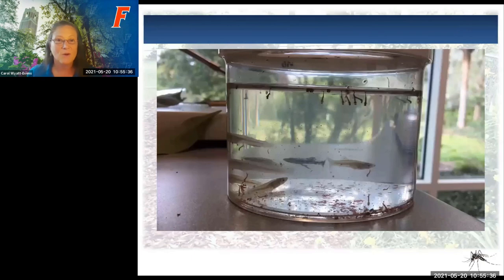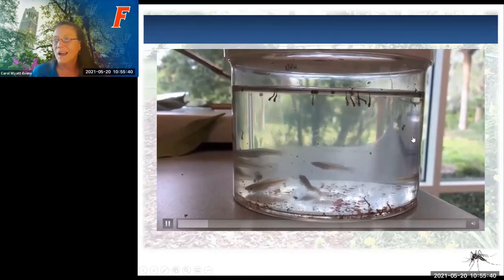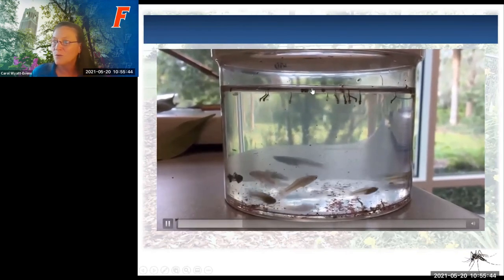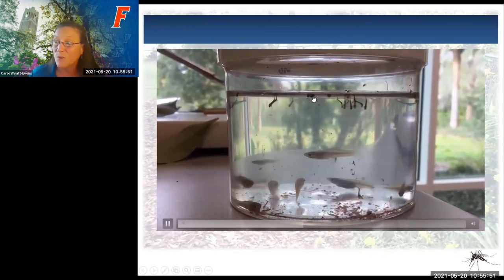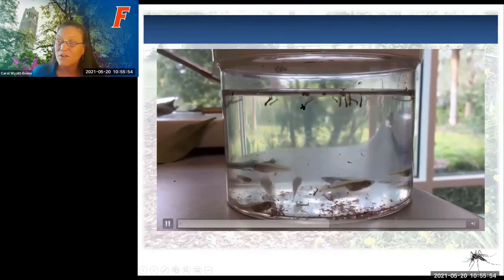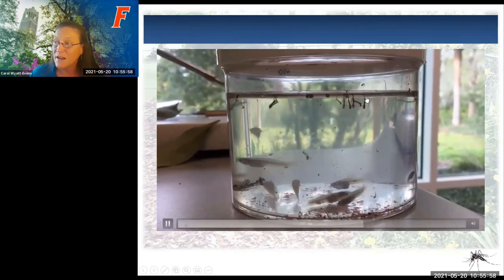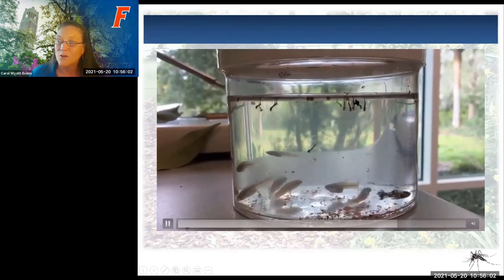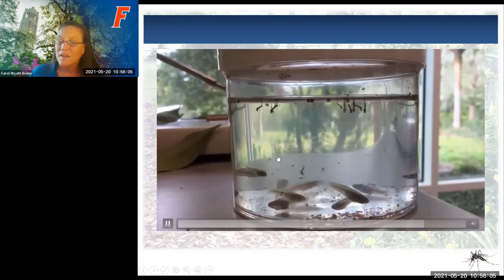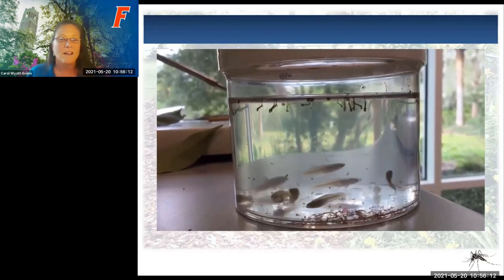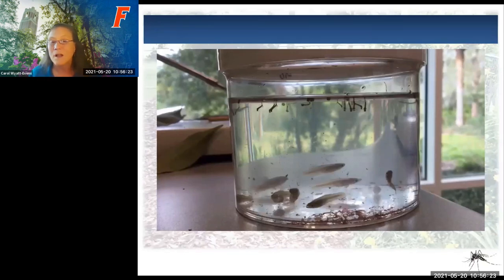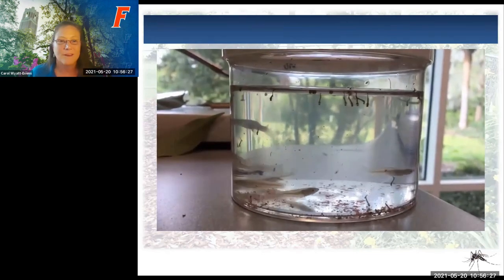Here is a video showing gambusia fish and mosquito larvae. You can see the larger pupal forms that will hatch into adults, and the smaller stage one through four instar larvae with their siphons breathing air from above the water. Gambusia fish are top feeders—which is important if you have a pond, because bottom feeders like catfish won't eat those surface larvae. You want a top-feeding fish like gambusia.